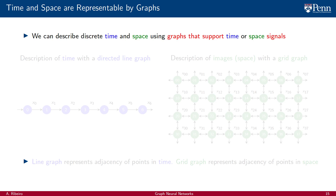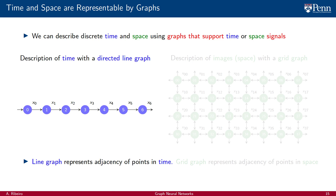In order to express convolutions as operations on graphs, begin by observing that we can always describe discrete time and space using graphs that support either time or space signals. Consider a time signal x with components xi and associate individual components with individual nodes of a directed line graph. A directed line graph is a good description of the proximity and causality of time, and it is therefore also a good description for the underlying structure of the signal x.